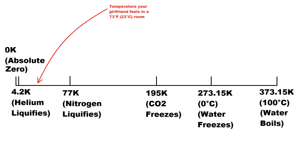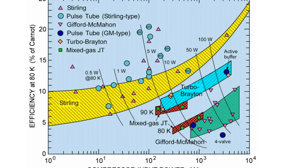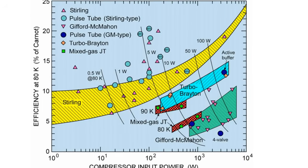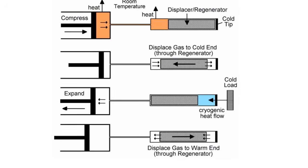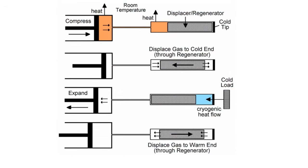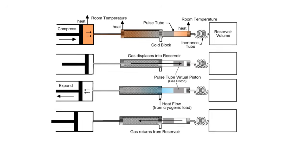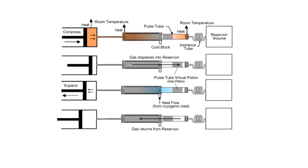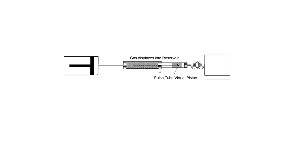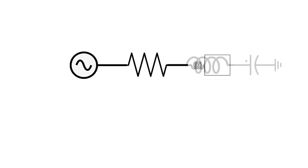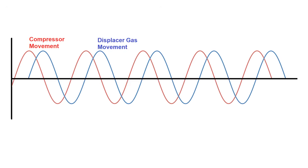A pulse tube isn't necessarily as efficient as a Sterling cycle cooler, but it has the huge advantage that it has no moving parts in the cold end. In the case of a Sterling cooler, a displacer piston moves back and forth in the cold end, but a pulse tube replaces this part with a carefully tuned pneumatic circuit that involves a long tube and a buffer tank, which act like an inductor and a capacitor in an electrical circuit, to create a phase shift between pressure and gas flow, similar to how an LC circuit creates a phase shift between voltage and current.